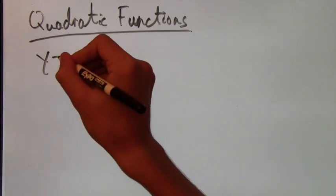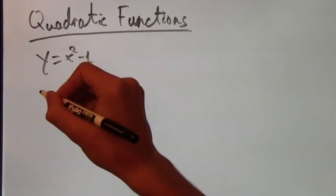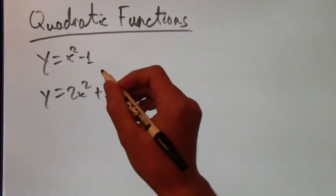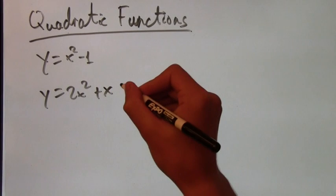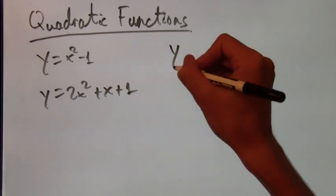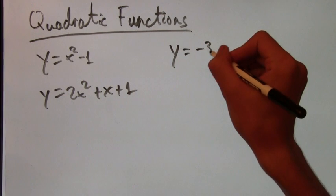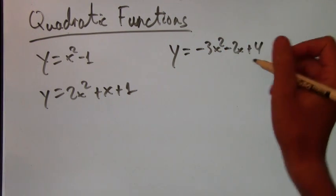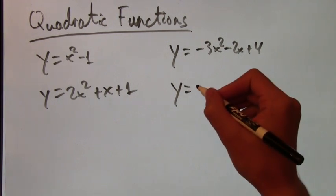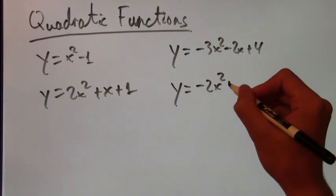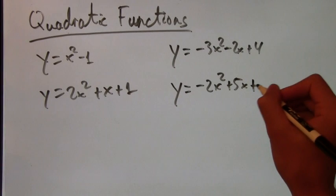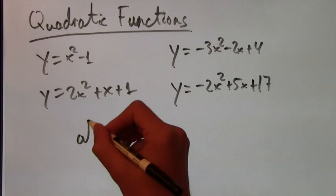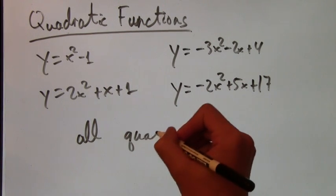Some examples of quadratic functions could be y equals x squared minus 1 or y equals 2x squared plus x plus 1 or y equals negative 3x squared minus 2x plus 4 or y equals negative 2x squared plus 5x plus 17. All of these have an x squared in there, so they're all quadratics.